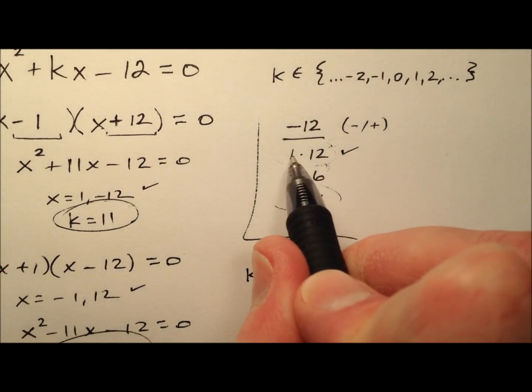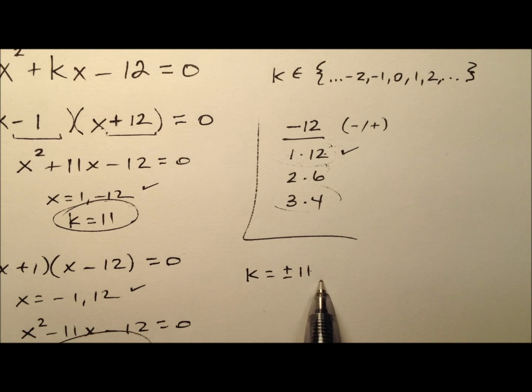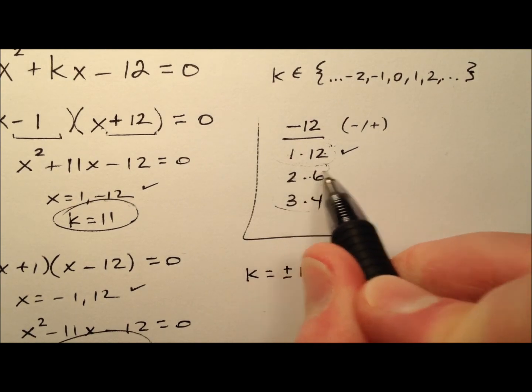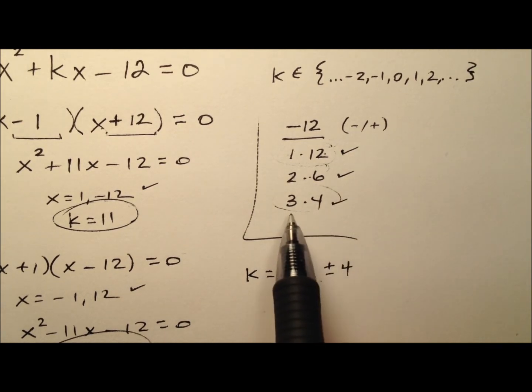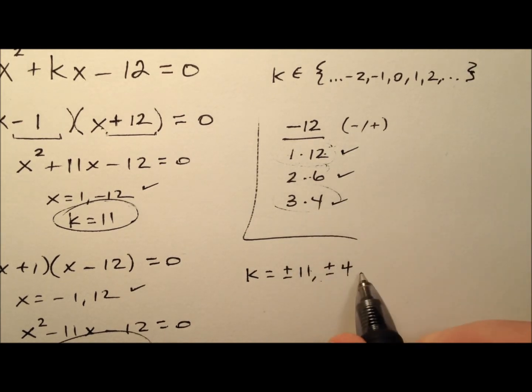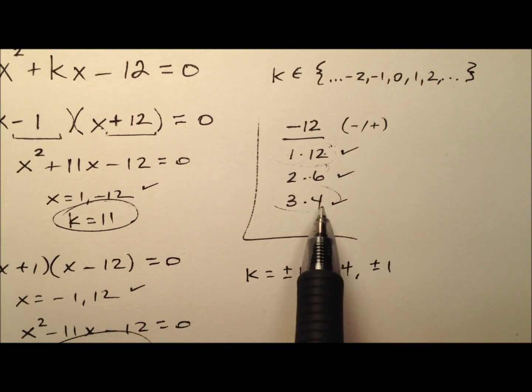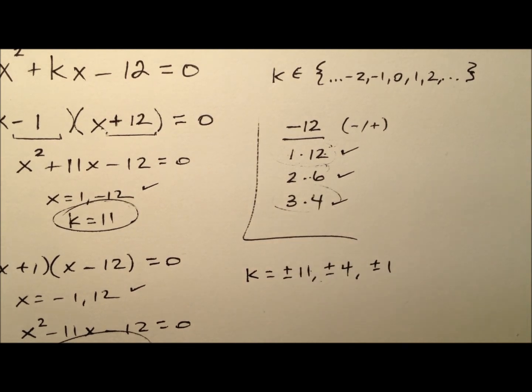Following that approach: from factors 1 and 12, we get k = ±11; from factor pair 2 and 6, k = ±4; and from factor pair 3 and 4, k = ±1, because 4 - 3 = 1.